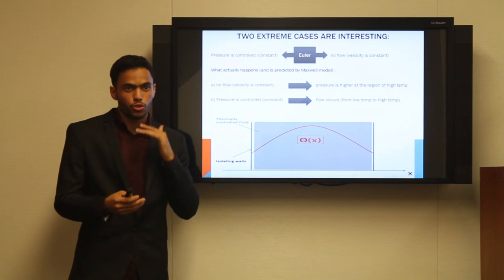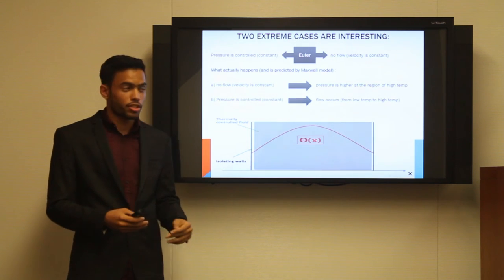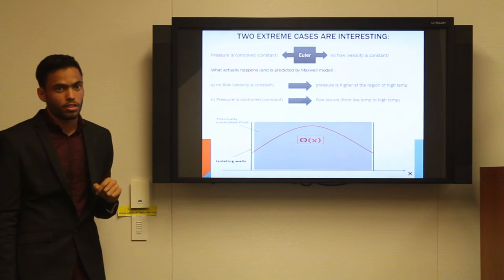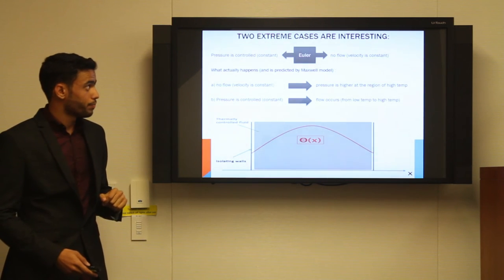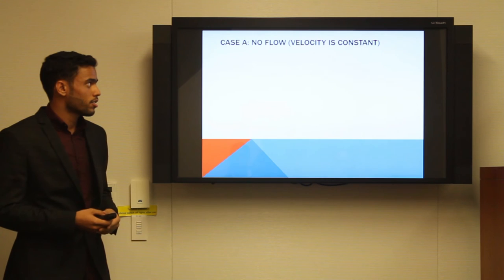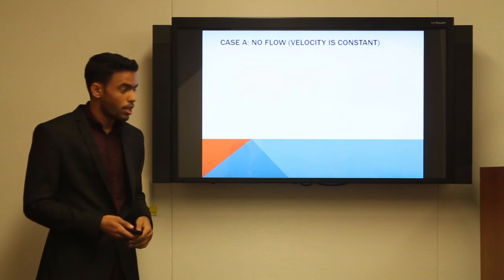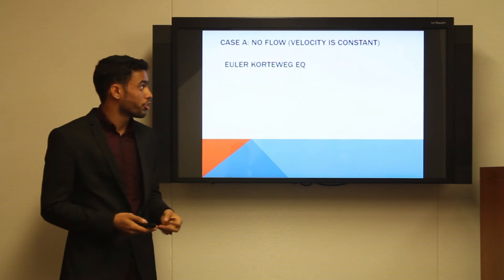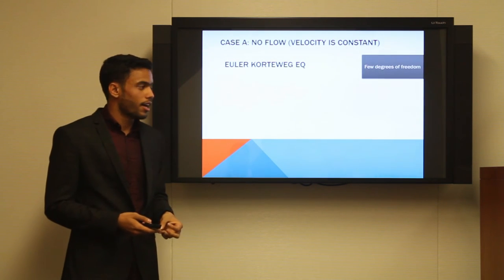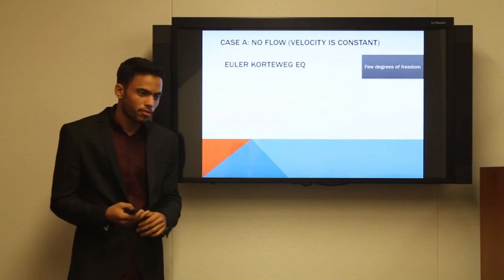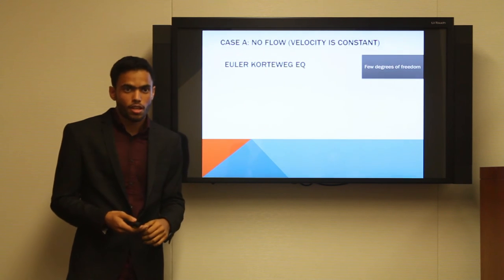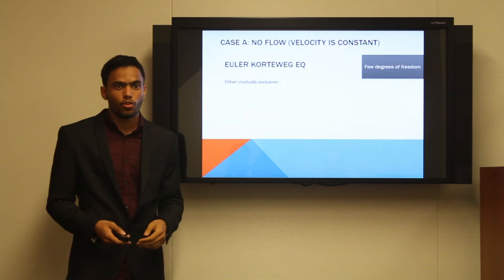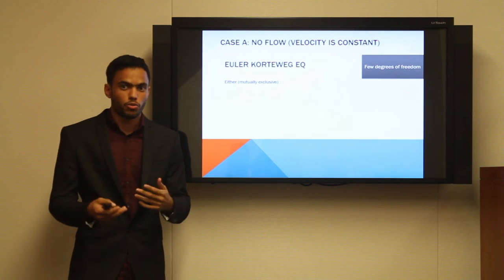We need to make sure that Navier-Stokes-Korteweg equation does predict at least these two effects. For the first case in which velocity is constant, one problem with Navier-Stokes-Korteweg equation is that there are some degrees of freedom, meaning that there are some parameters that need to be assigned or need to be measured, but in our case we did not know them.